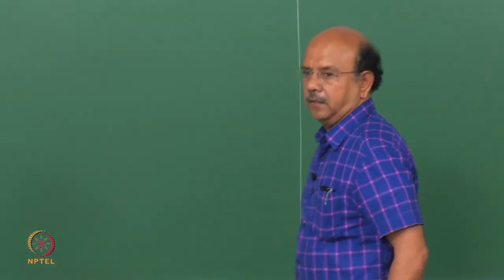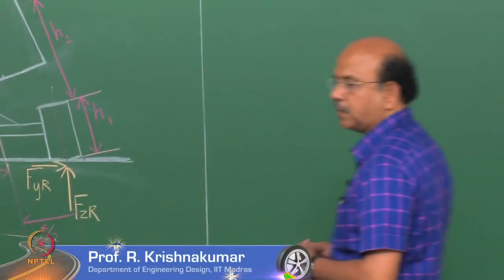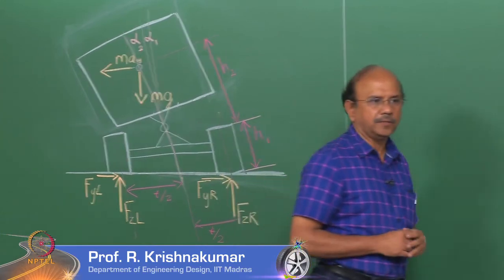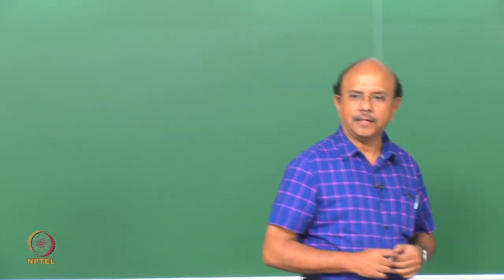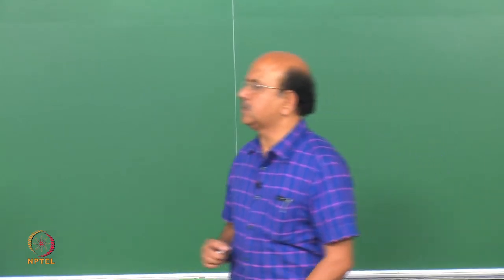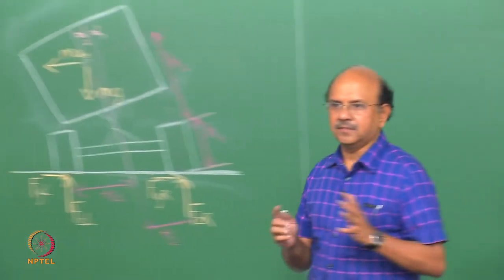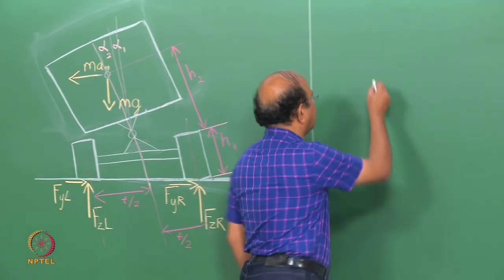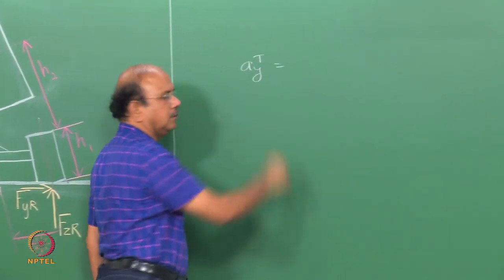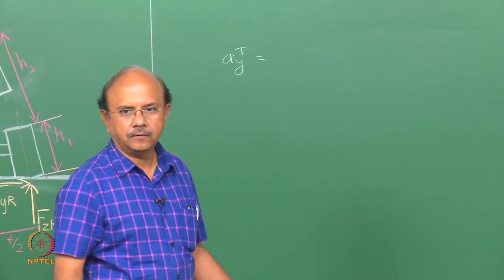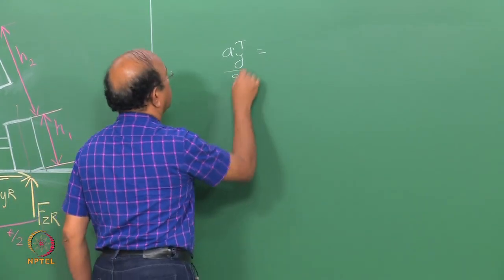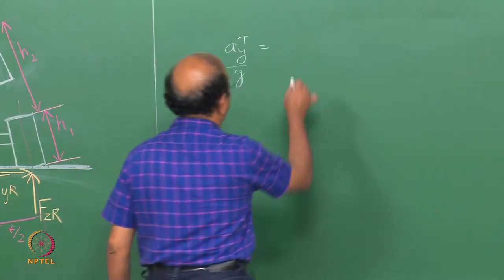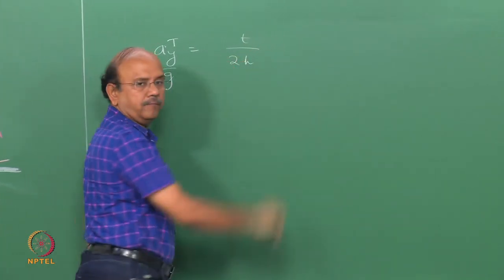In the last class, we were looking at rollover. This will be our last topic on lateral dynamics before we move over to vertical dynamics. One of the important results we got, based on the static condition of rollover, is a critical threshold for Ay, or Ay/g — where T indicates threshold — equal to T divided by 2H.